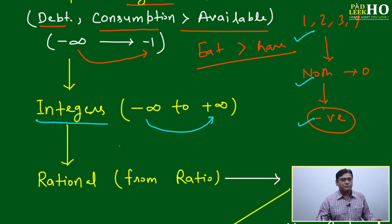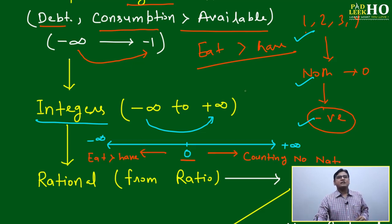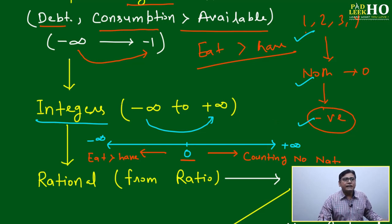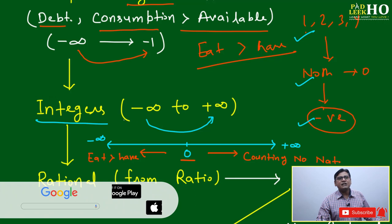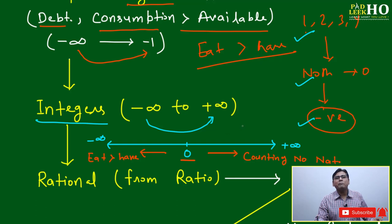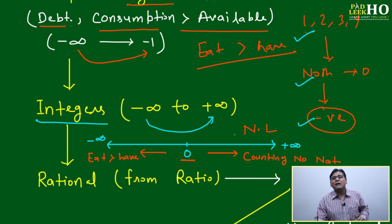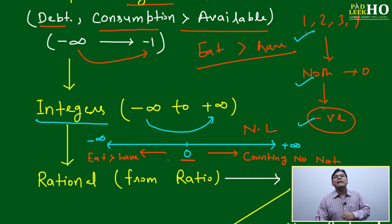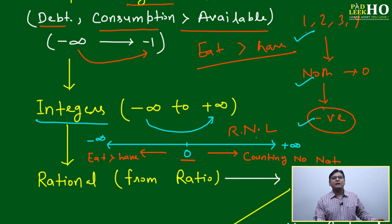Combining all three concepts — you have something, you have nothing, or you have the negative — it becomes the set of integers. The set of integers lies from minus infinity to plus infinity. If you combine all three, it becomes the famous number line — very famous in mathematics. All of mathematics and science started from this number line. I am telling you: this one single straight line has given all mathematics and all science. It is also called the real number line.